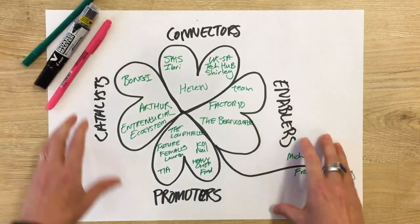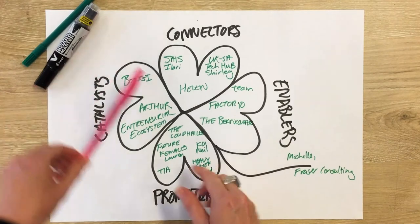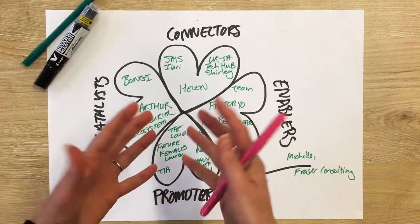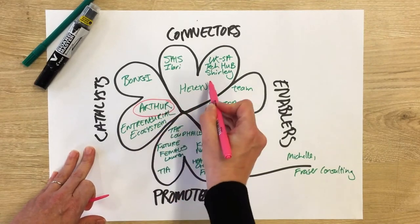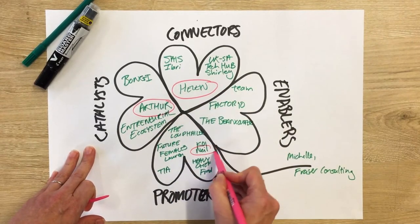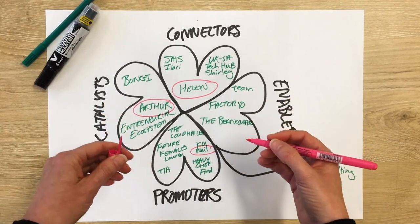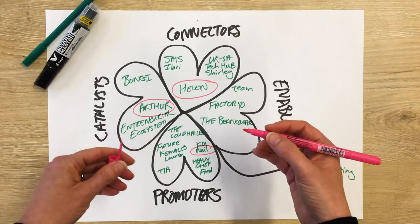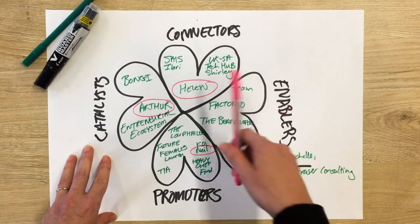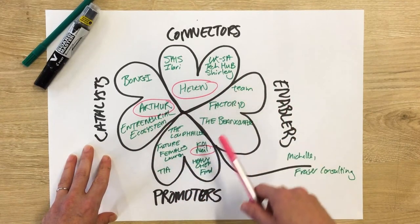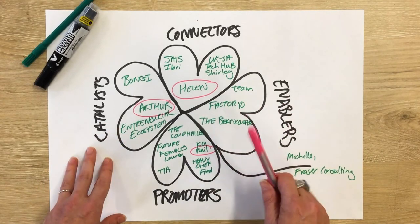Once you've filled your clover with names of people and organisations, you may want to go through it and color-code which relationships are formal and which are informal. My informal ones are Arthur, Helen, and Neil — this is where I'm freer to explore opportunities without the pressure of being professional or measured. Understanding these differences will help you decide on a stakeholder engagement strategy for each cloverleaf, or whether you need more formal or informal contacts in any area.